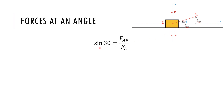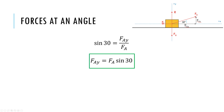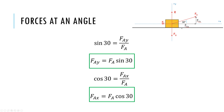You want to remember SOH CAH TOA. The sine of the angle equals the opposite side divided by the hypotenuse. So the y component of the applied force is the applied force times the sine of the angle. And for the x components, since it's adjacent to the angle, I'll use cosine — the x component of the applied force is the applied force times the cosine of the angle. These aren't in the data booklet, but they come up a lot. There is even a reference in the front of the data booklet with a generic force broken into horizontal and vertical components using sines and cosines, so you can use that as a reference triangle.